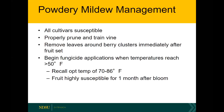Regarding management: all cultivars are susceptible, but properly pruning and training the vine will help open it up and reduce the humidity the fungus needs. Since the fungus is almost entirely outside the plant, it's fairly susceptible to drying out in low humidity environments. Removing leaves around berry clusters immediately after fruit set will help open up those berry clusters and reduce the microclimate that allows the fungus to develop.